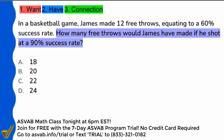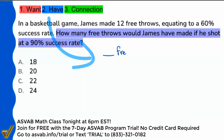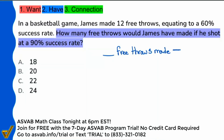So right here: how many free throws would James have made if he shot at a 90% success rate? That's what we're looking for — how many free throws. And the condition tagging along with it: if he shot at a 90% success rate. So we're saying blank free throws made, connected to 90% success.